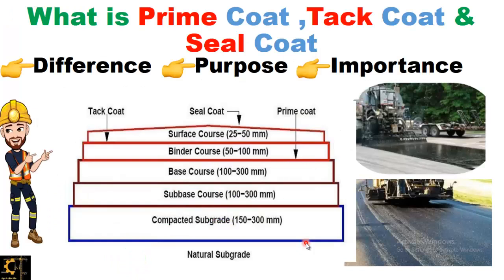Now the question arises: where are these coats applied? As you can see in this diagram, prime coat is applied between a bituminous layer and a non-bituminous layer — that is, between base course and binder course. Binder course is actually the asphaltic base course. So prime coat is applied between a non-bituminous and a bituminous layer, whereas tack coat is applied between two bituminous layers to form a bond between them. The surface course and binder course or asphaltic base course are the two bituminous layers, and the layer between them is the tack coat. Seal coat is applied on the prepared surface of the road to seal it from the top to prevent moisture penetration into the lower layers.